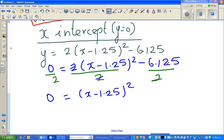this 2 and this 2 gets cancelled. So that is x minus 1.25 squared. And 6.125 divided by 2 is, we're doing the opposite, that is 3.0625.